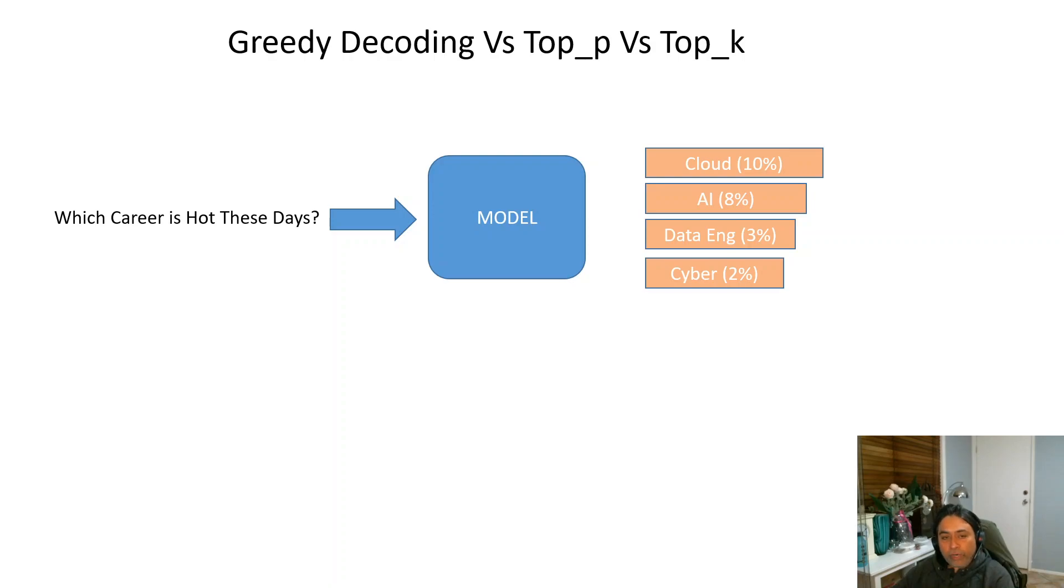For example, on your screen you can see that we have asked the question which career is hot these days from our model. The model went into its dataset, found out these four similar answers or tokens, and assigned a score to each answer. For example, it has assigned a score of 10% to cloud and 2% to cyber and so on.